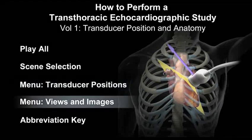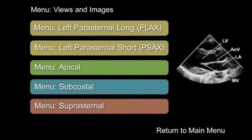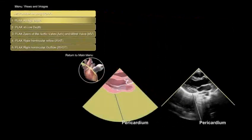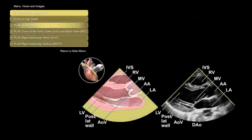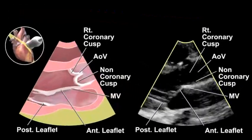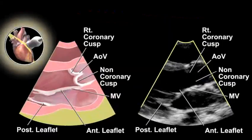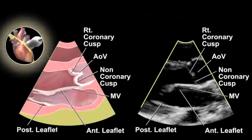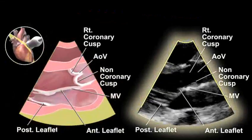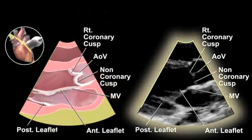The Views and Imaging menu allows the user to navigate from a particular transducer position menu, such as left parasternal long, to specific images acquired within that window, such as PLAX high depth, PLAX low depth, and PLAX zoom of the aortic and mitral valves. Each animated loop shows a finder image in the upper left that depicts the transducer position, an illustration of the sectional anatomy of the heart on the left, and the echo image with labels on the right.